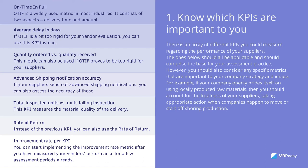Rate of Return (ROR): instead of the previous KPI, you can also use the rate of return. In addition to low-quality goods, the ROR accounts for overdue and excess items. Find the rate of return by dividing the quantity of returned items by total items received and multiplying by 100. In this case, the lower the rate, the better the supplier performance.